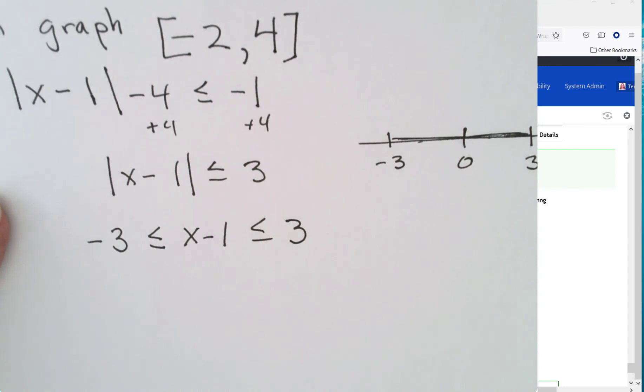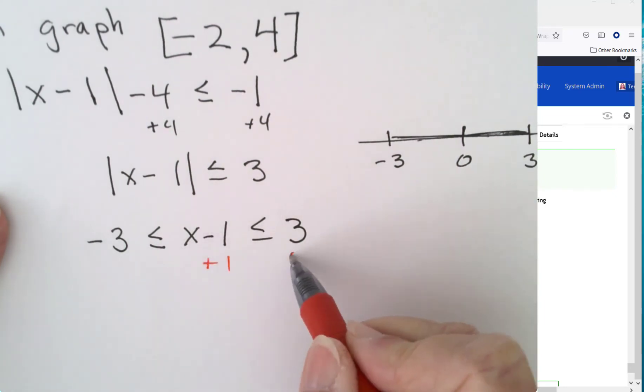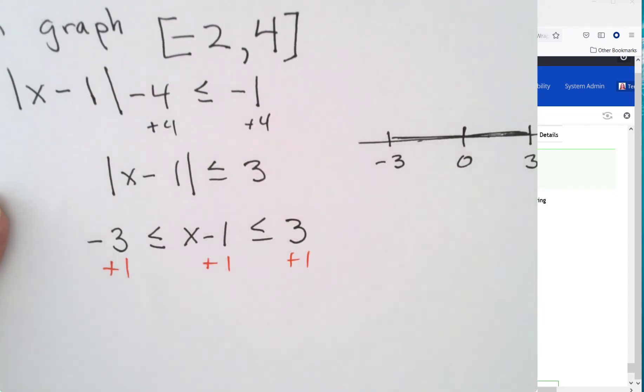So you're going to add a 1 all the way across. And this gives us negative 2 is less than or equal to x which is less than or equal to 4.